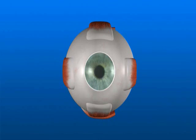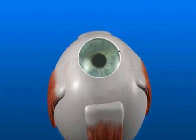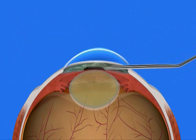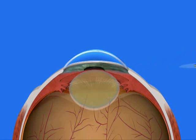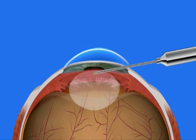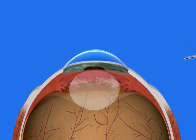Usually with cataract surgery, a small incision is made in the eye. The front portion of the thin outer covering of the lens is opened to allow removal of the cataract inside. The cataract is then gently broken up and vacuumed out.